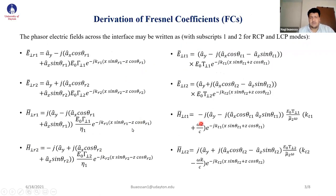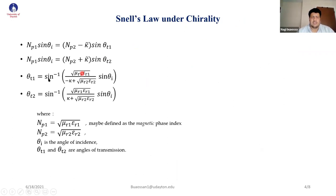Those are the equations we get for the Fresnel coefficients. Then we have Snell's Law under chirality, where Snell's Law becomes dependent on the chirality parameter. Theta T1 and theta T2 are the transmission angles, and nb1, nb2 are the magnetic phase indices.